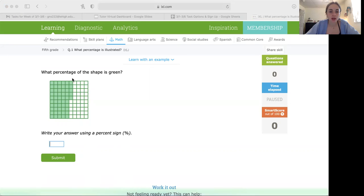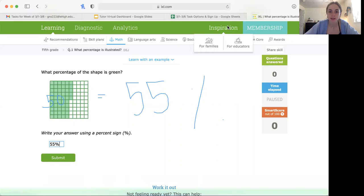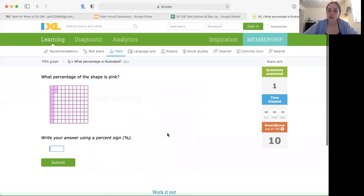So it says what percentage of the shape is green, so we know 10, 20, 30, 40, 50. You have 50 and then you have 1, 2, 3, 4, 5 and that equals 55. So then your answer is 55% because it's out of 100. You want to write your answer 55%, make sure you include the percent sign, and submit your answer and that was correct.